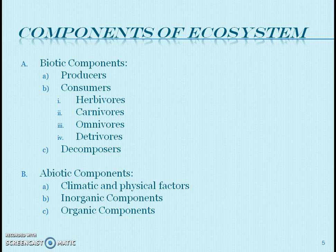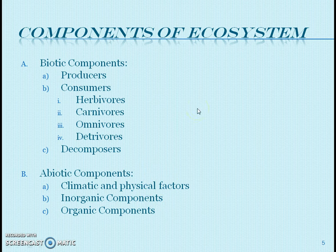The next point is components of ecosystem. There are two types of components. The first one is biotic components and the second one is abiotic components. In biotic components, we can classify them as producers, consumers, and decomposers. Producers are organisms who can produce their food with the help of sunlight. There are two types of producers: photo-autotrophs and chemotrophs.